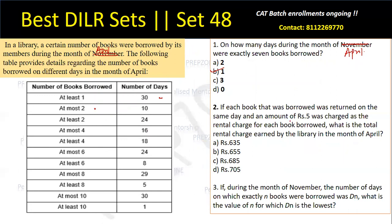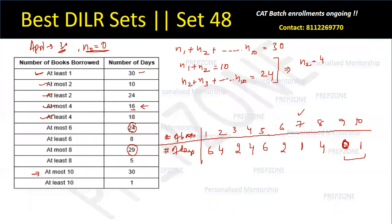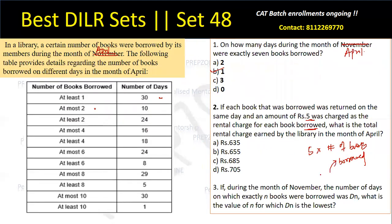Question 2: If a rental charge of ₹5 was charged for each book borrowed, what is the total rental charge earned by the library in April? Total = ₹5 × total number of books borrowed. Total books = weighted sum: 6×1 + 4×2 + 2×3 + 4×4 + 6×5 + 2×6 + 1×7 + 4×8 + 1×9 + 0×10 = 127. So total rental charge = 127 × 5 = ₹635.